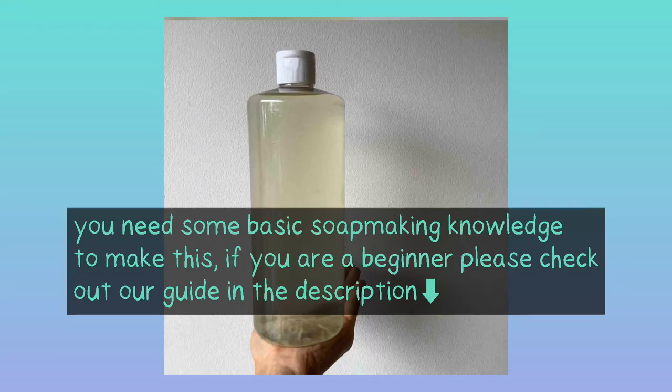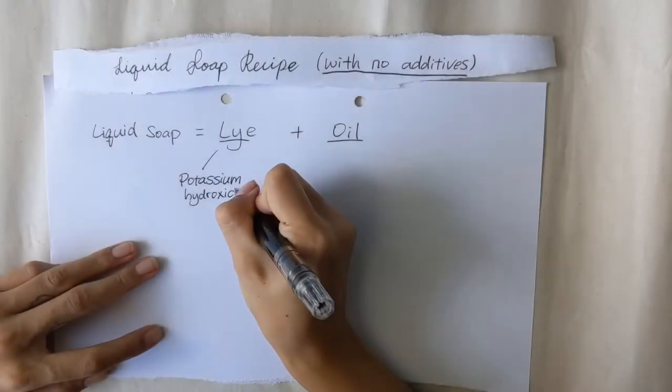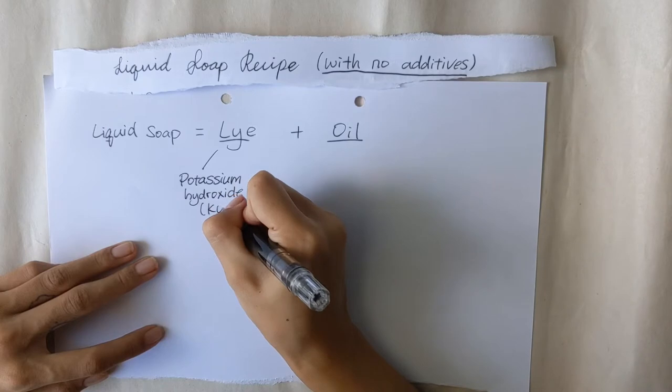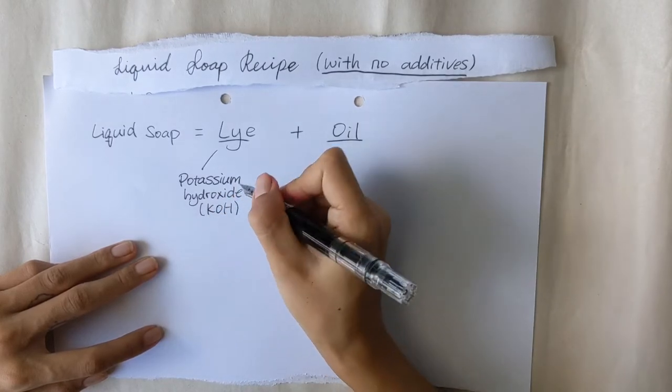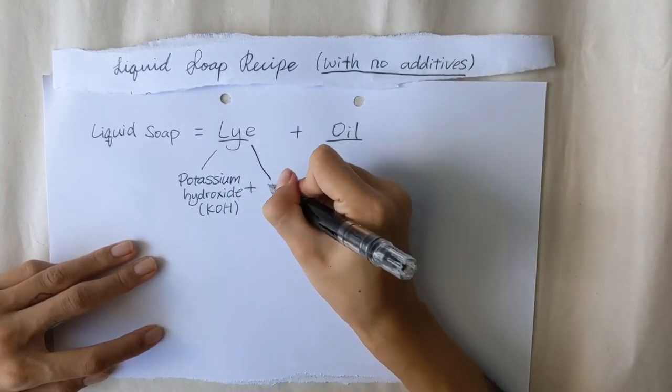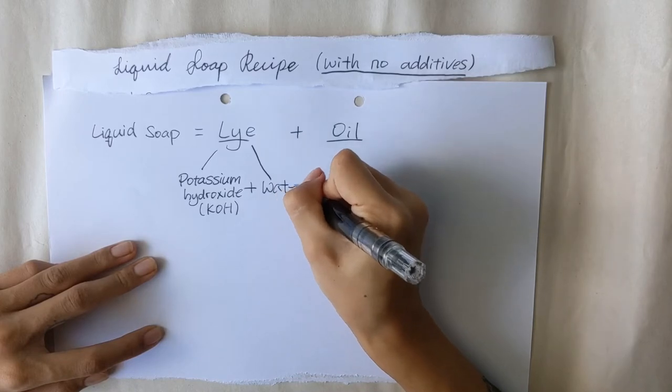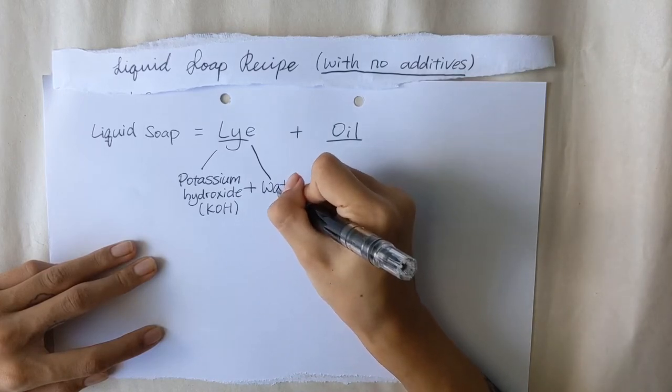So first we'll be making the recipe. As we know, soap is made by combining a lye solution with oil. In the case of liquid soap, we will be using the lye potassium hydroxide, also known as KOH.